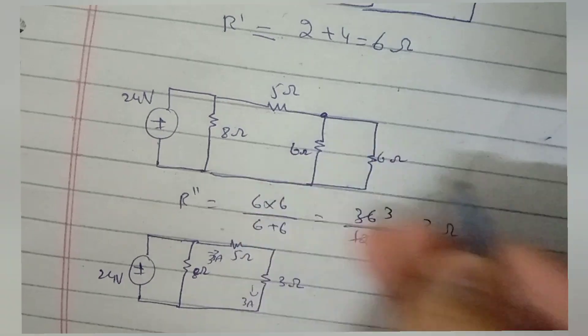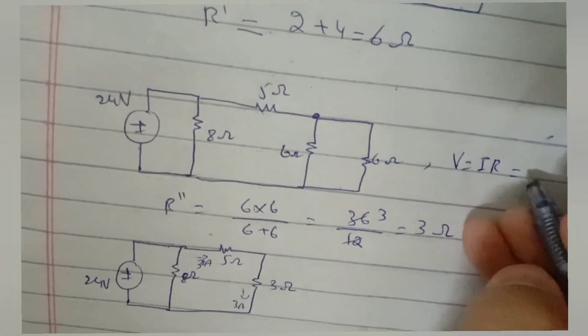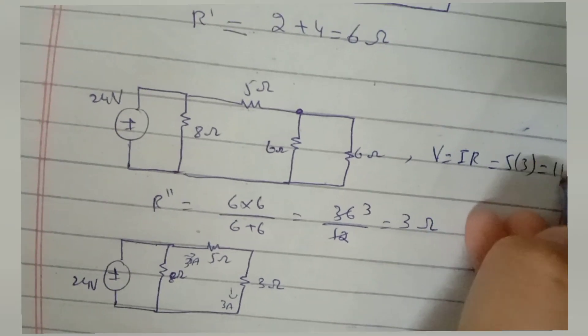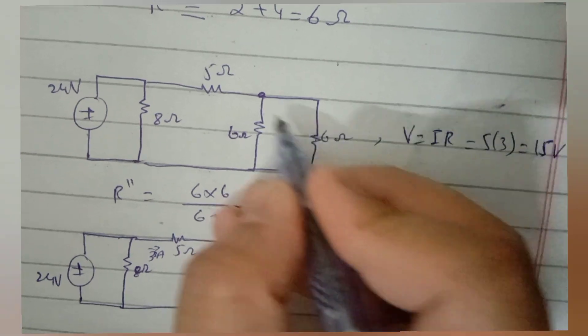Expanding 3 ohm resistor, we get two 6 ohm parallel resistors. Here we can calculate the voltage at this node through Ohm's law. It comes out to be 9 volts after we subtract the dropped voltage from 24 volt; dropped voltage is 15 volts.